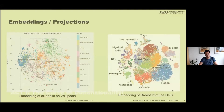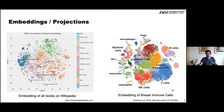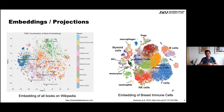Embeddings and projections play a huge role nowadays in analyzing high-dimensional data, complemented by many other techniques like high-dimensional visualization. On the left-hand side you see an embedding of all books on Wikipedia, where different topics nicely cluster. On the right-hand side, breast immune cells are projected — you see your data as feature vectors, reduce dimensionality to two dimensions, and the goal is to reveal similarity and patterns. The closer two points are in the embedding — essentially a scatter plot — the more similar they are.